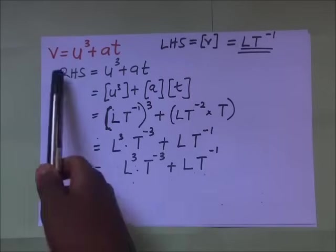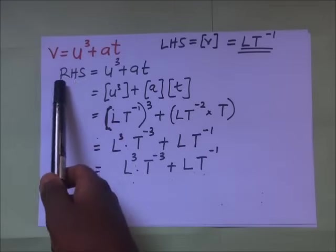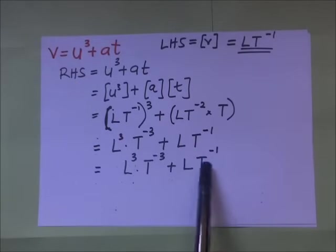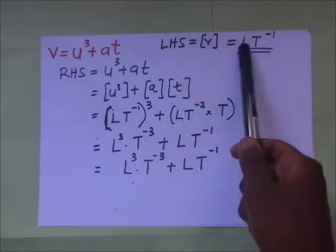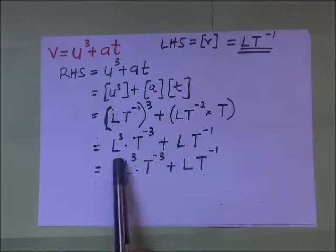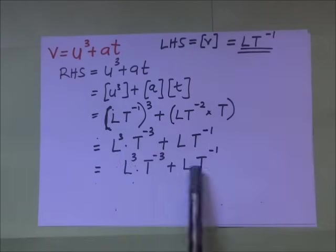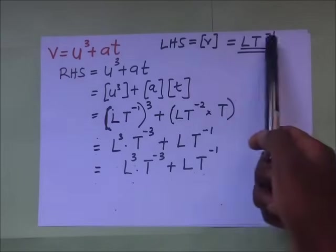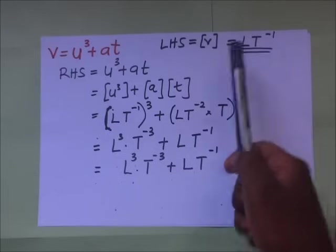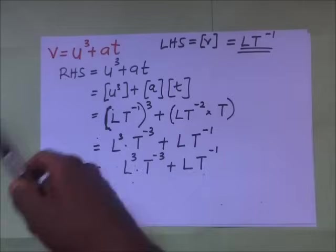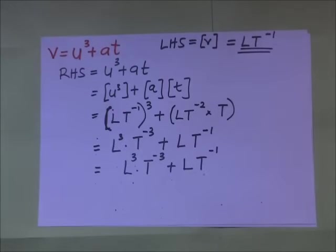On the right-hand side we have L³T⁻³ + LT⁻¹, and on the left-hand side we have LT⁻¹. Since the units of the right-hand side do not coincide with those on the left-hand side, this equation is not dimensionally consistent.